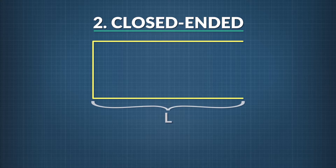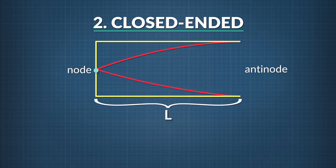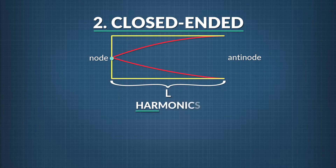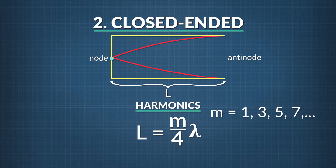The second type of standing wave system has one end open and the other one closed. In a system like this, a node will form at the closed end and an antinode will form at the open end. The fundamental frequency corresponds to a wavelength that looks like this. The harmonics of the fundamental frequency follow the equation: L equals m divided by 4 times lambda, where m is any odd positive integer: 1, 3, 5, etc.